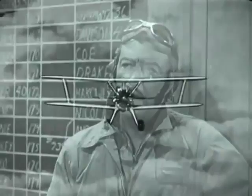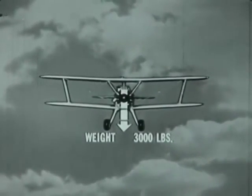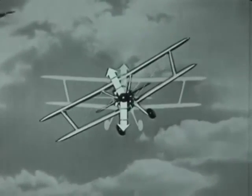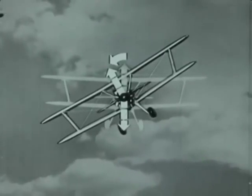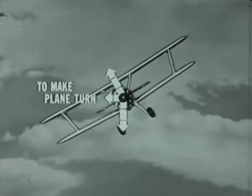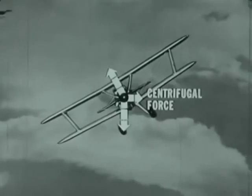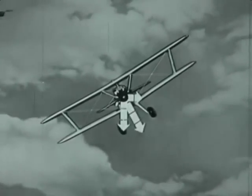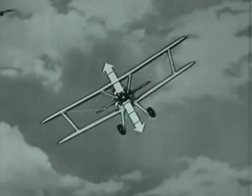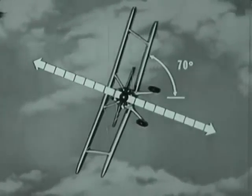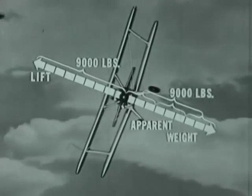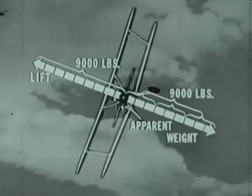In straight and level flight, lift must equal weight. For a 3,000-pound plane, 3,000 pounds of lift is required. Lift acts perpendicular to the wing, so in a bank, some lift is diverted to turn the plane. The plane's tendency to go straight creates centrifugal force, and actual weight plus centrifugal force equals apparent weight. In a 70-degree bank, apparent weight is about three times that of level flight — roughly 9,000 pounds — requiring maximum angle of attack plus at least 77 knots.